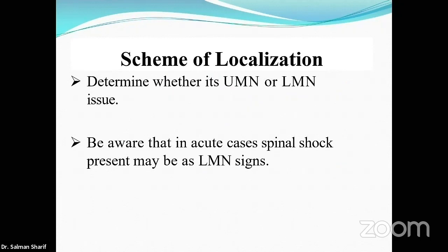When examining a patient, it's important to determine whether the lesion is upper motor neuron (UMN) or lower motor neuron (LMN). The upper motor neuron starts from the cortex and ends at the spinal cord — around D12/L1. The lower motor neuron starts there and extends distally. For example, a UMN lesion in the cervical or dorsal spine up to D12 will produce UMN signs, while an LMN lesion at L1/L2 to S1 will produce LMN signs.